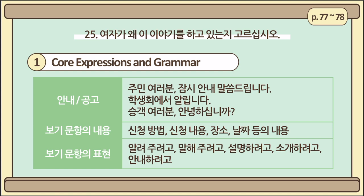Generally, the first sentence reveals the target of the announcement or notice. For example, if you hear 주민 여러분 잠시 안내말씀 드립니다 — 주민 means a resident, a person who lives in a certain area like an apartment, so 주민 여러분 means 'all you residents.' 잠시 안내말씀 드립니다 means 'I'd like to briefly convey an announcement to you.' So the place where this announcement is made may be an apartment building, with the residents as the target audience.